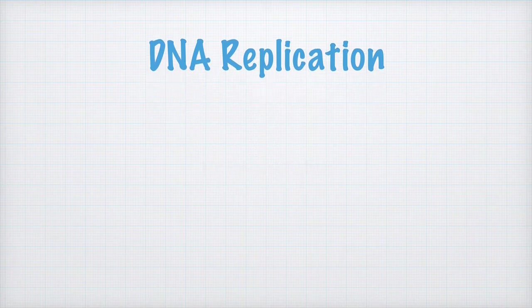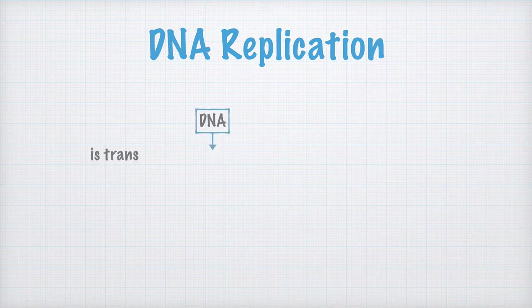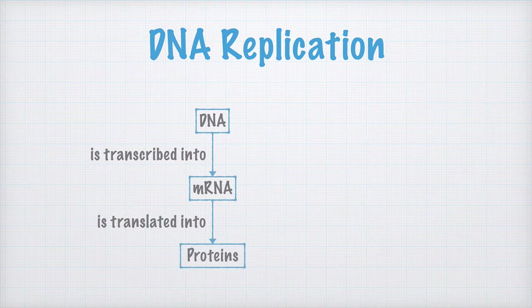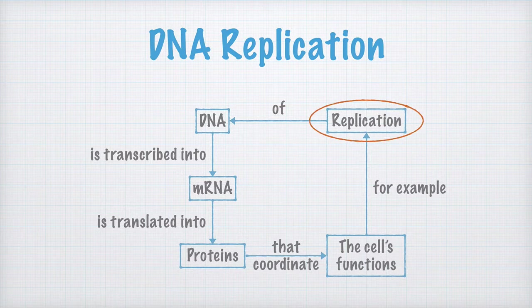This is summarized in this drawing, which you hopefully already have seen and copied to your notes. It says that DNA is transcribed into mRNA, which is then translated into proteins, which coordinate or carry out almost all of a cell's function. For example, replication of the DNA molecule. And of course, this video is all about DNA replication.